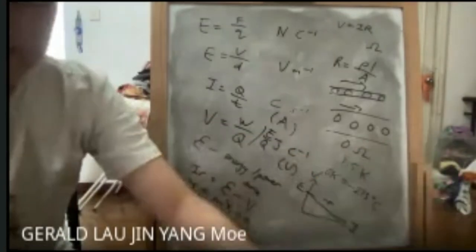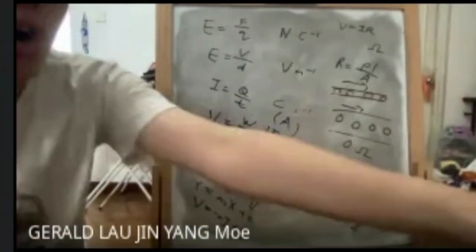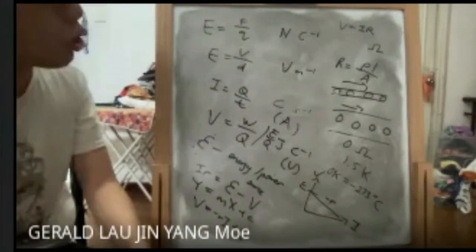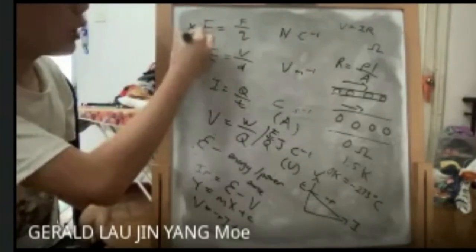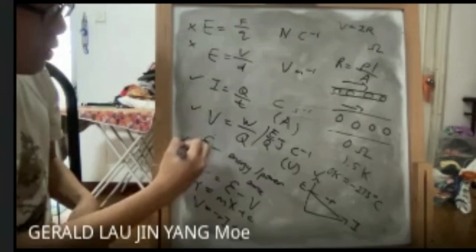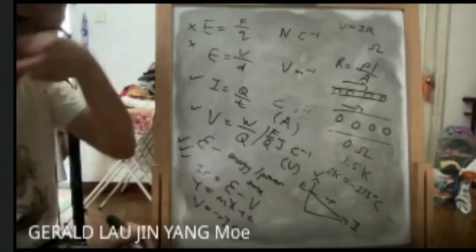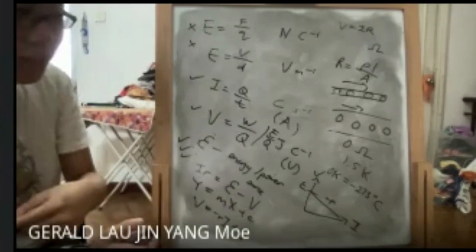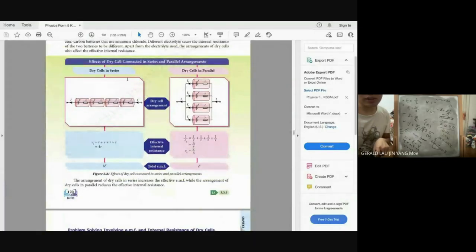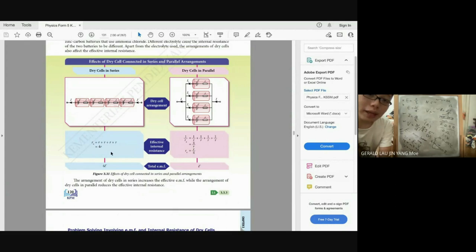The key equations for this chapter are the voltage drop formula, V = ε − ir, and ε = I(R + r). This chapter has more equations than previous ones, making it harder. For effective internal resistance: batteries in series give higher total resistance and higher EMF; batteries in parallel give lower effective internal resistance and lower EMF.